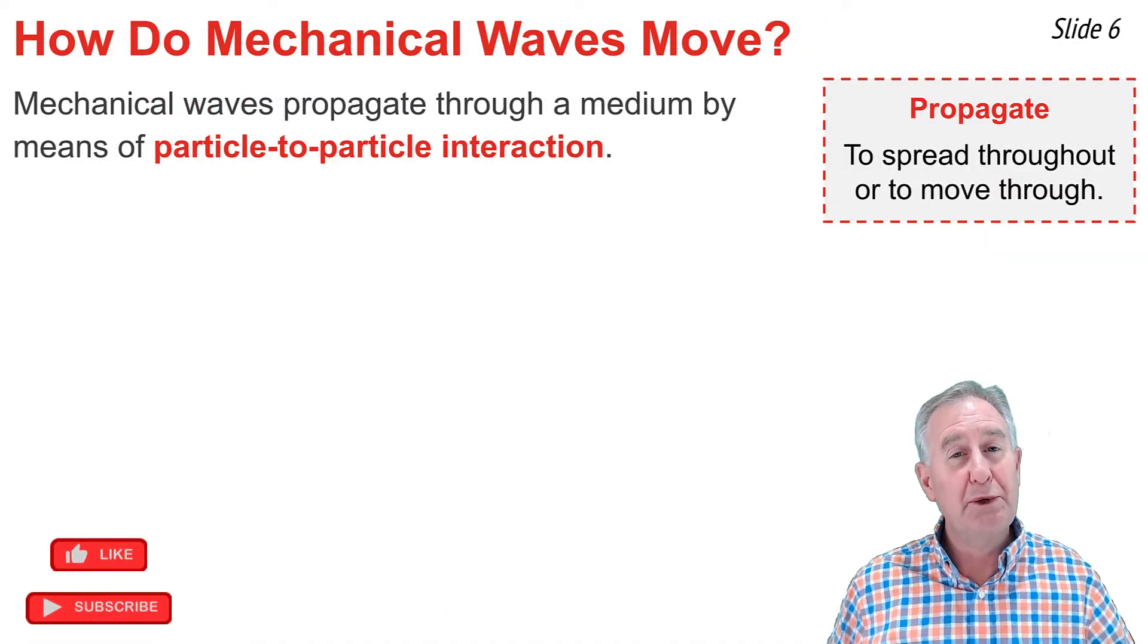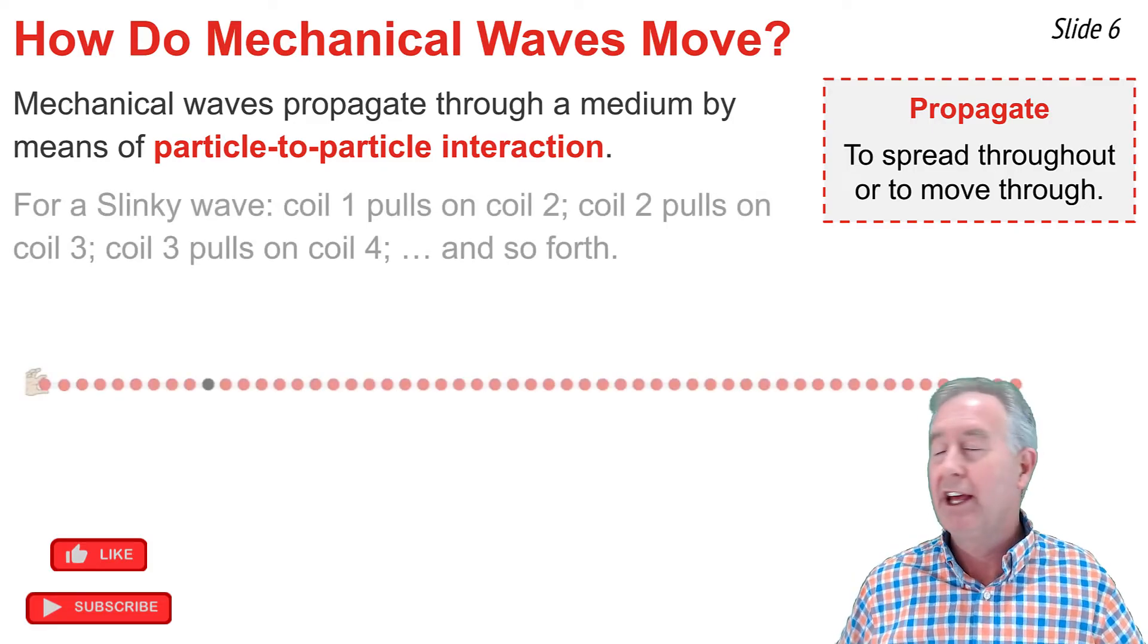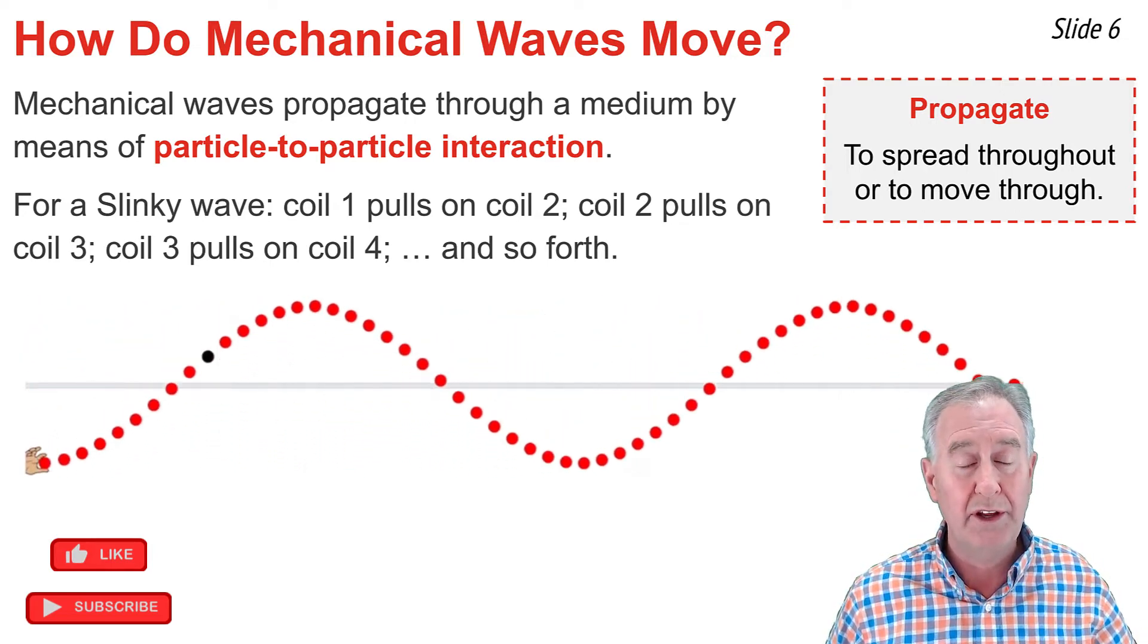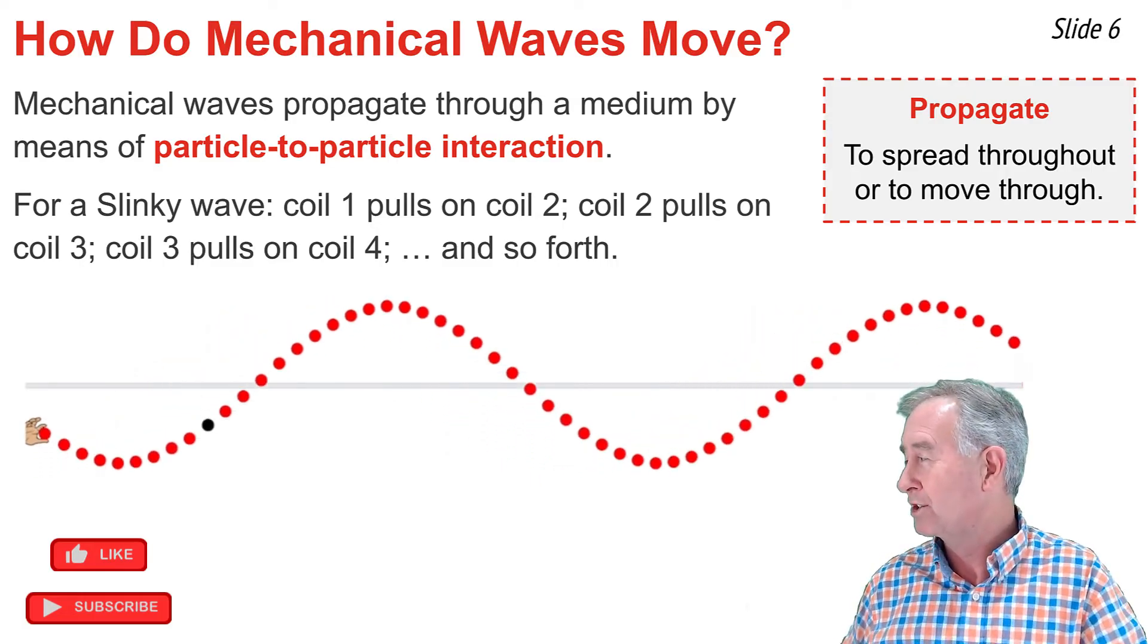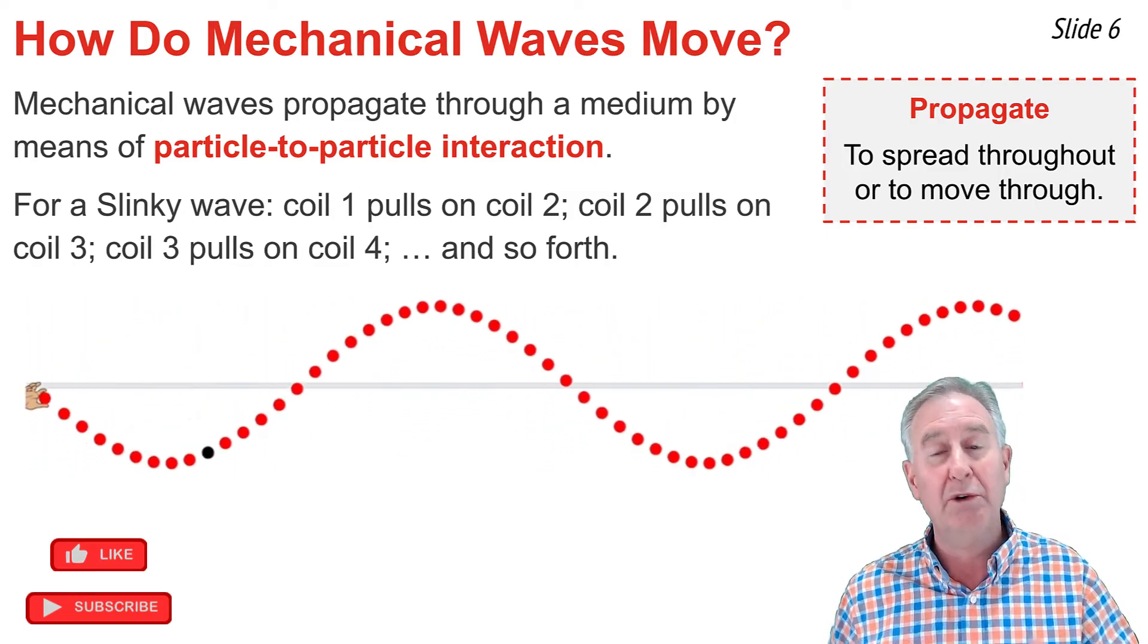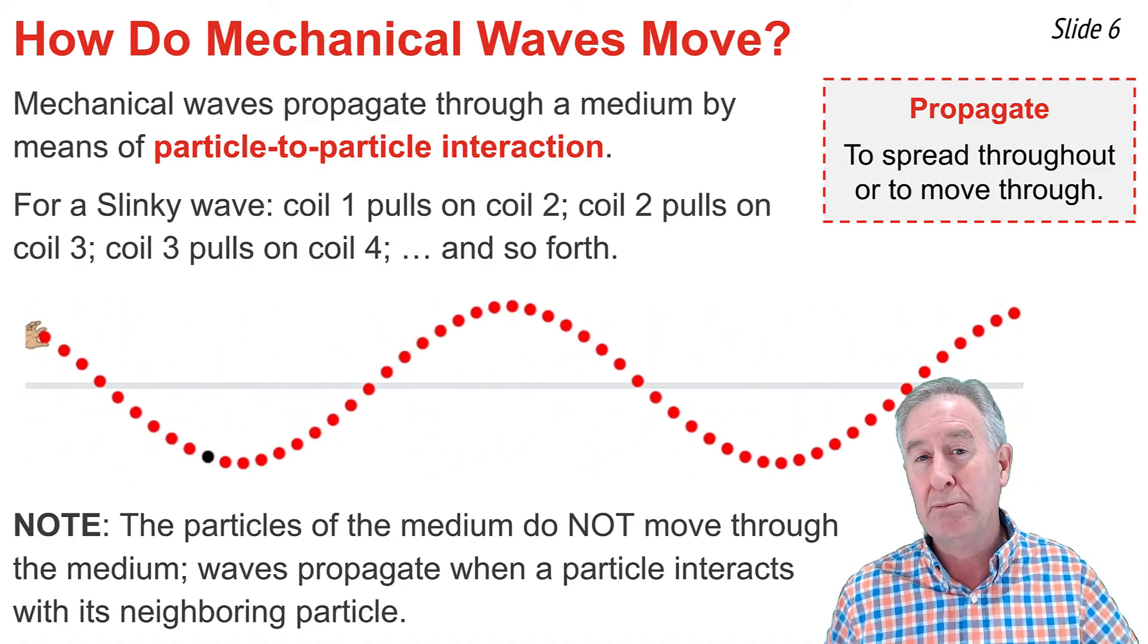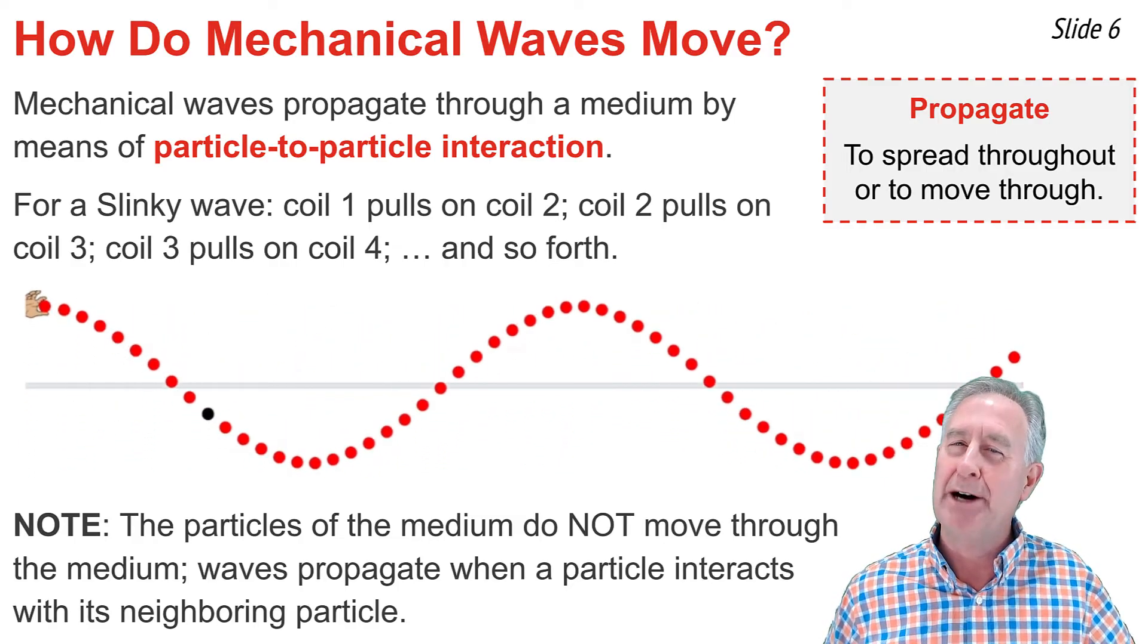The question is often asked, how do waves move? A mechanical wave will propagate or move or spread through a medium because of particle-to-particle interaction. Here is our model of the slinky again, with each coil being represented by a rigid sphere. If I take the first coil and begin to vibrate it up and down, I set that coil into vibrational motion. The first coil will pull on the second coil to set it into vibrational motion. The second coil pulls on the third coil to set it into vibrational motion. And soon, from coil to coil, particle to particle, we have the wave that has propagated or spread through the entire medium. In this situation, it's important to recognize that the particles do not have to move in order to have a wave. What must happen is the particles must interact with their neighboring particles in order to have wave motion. But the particles themselves simply vibrate about a fixed position.